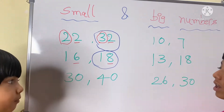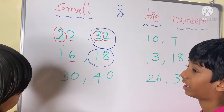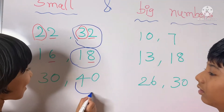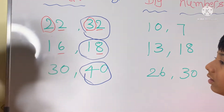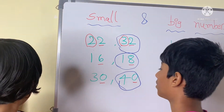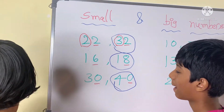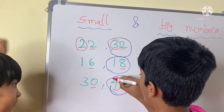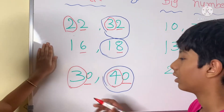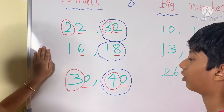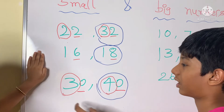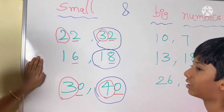30 and 40 — which is the big number? Forty. Why? Because in the ones column, 0 and 0 are common. But in the tens column they are different — 3 and 4. So 3 is lesser than 4, and 4 is greater than 3. So 40 is big.